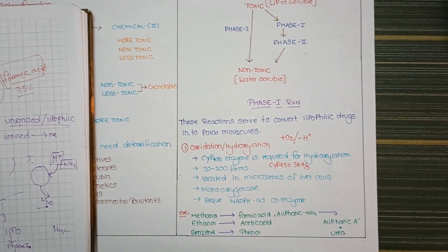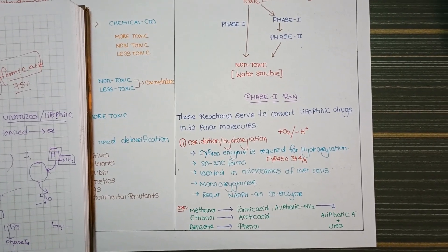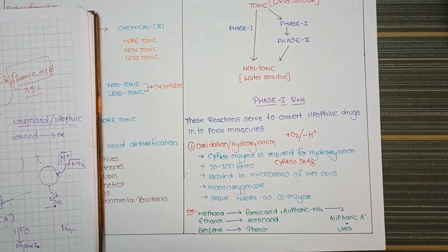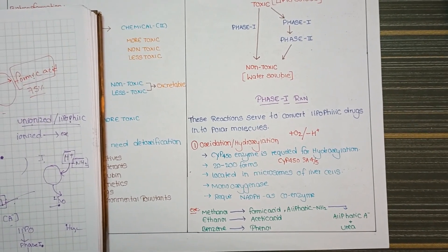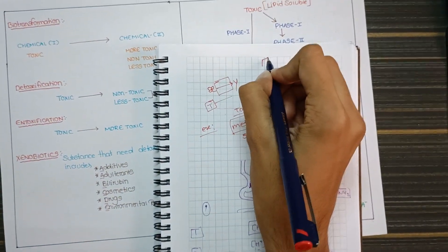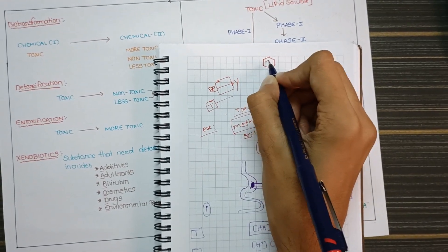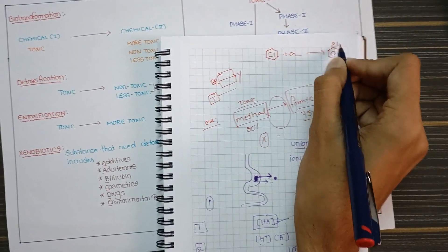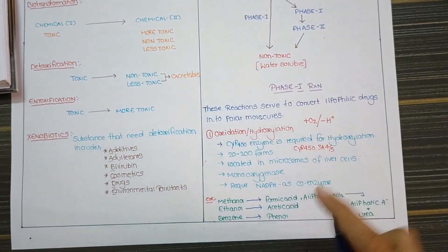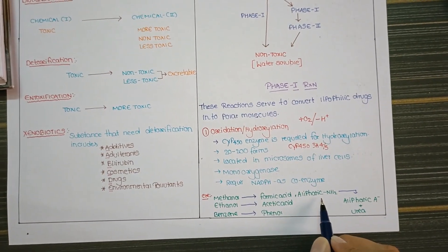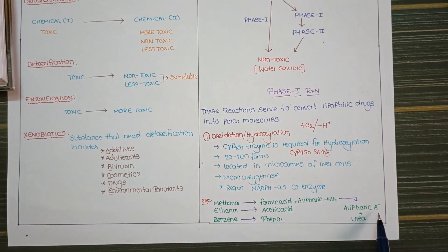Examples of oxidation reactions: methanol undergoes oxidation to form formic acid; ethanol undergoes oxidation to form acetic acid; benzene (C6H6) undergoes oxidation by this enzyme to form phenol; aliphatic amines undergo oxidation to form aliphatic acids or urea.